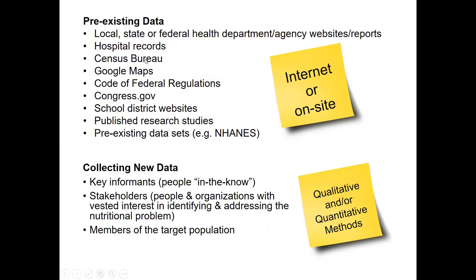These are just some examples of different types of data you could collect. Pre-existing data can often be found through the internet, through reports, government websites, or other types of websites. Or you might go to an on-site facility to gain information. You could look at local, state, and federal health department or health agency websites and reports, hospital records, or the Census Bureau.